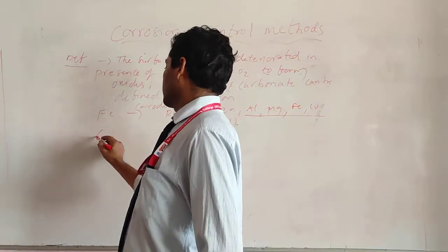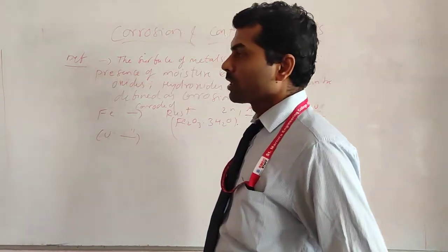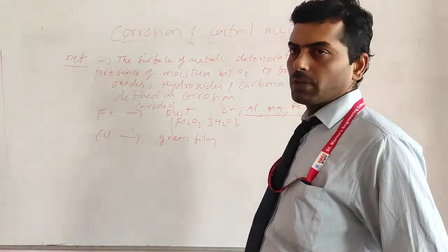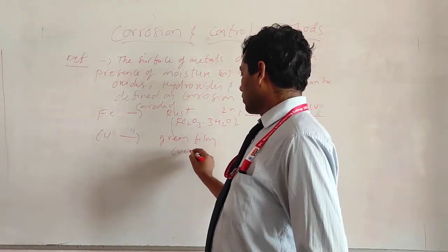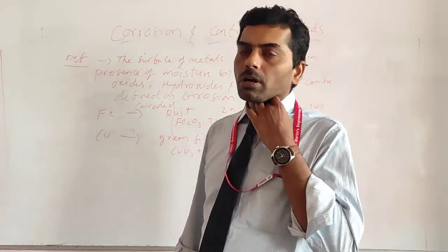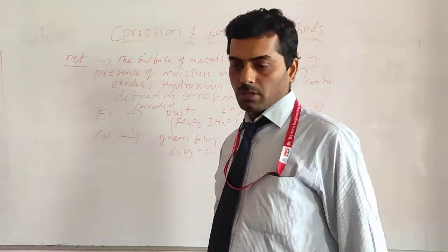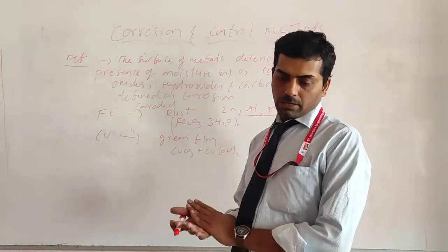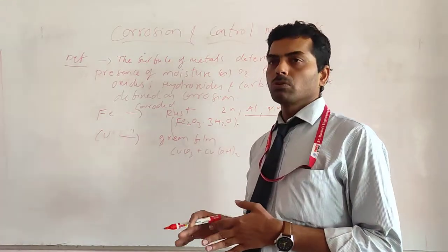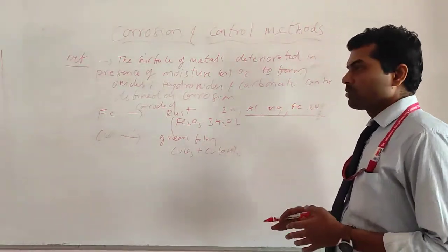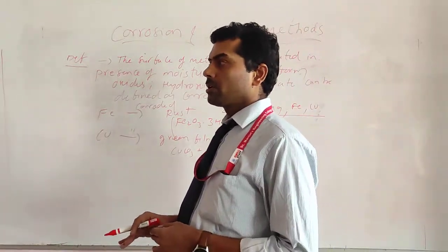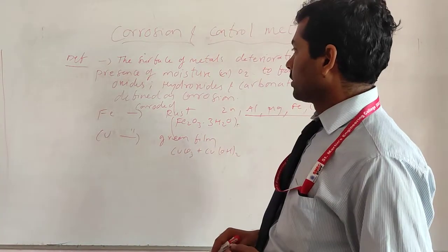Another example is copper. When copper is carbonated, you can see the formation of a green film on its surface. That green film is nothing but copper carbonate plus copper hydroxide. So like this, when metals are exposed to the atmosphere, gases, or any mixture of liquids, there is a process of corrosion. This may be of types such as waterline corrosion, crevice corrosion, or surface corrosion — we have different types of corrosion.